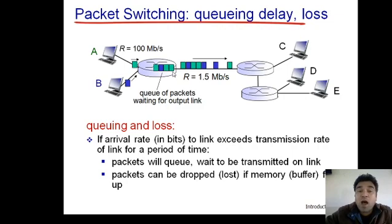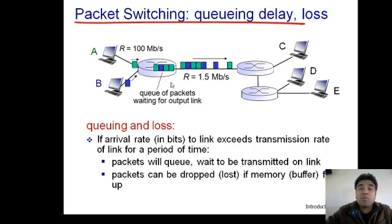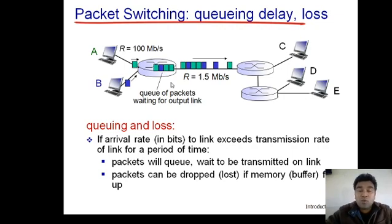Similarly, the queuing delay for the third packet in the queue is 2L/R, because two packets are ahead of it. In general, queuing delay equals the number of packets ahead in the queue multiplied by L/R — where L/R is the transmission delay of a single packet. That is how queuing delay is calculated.